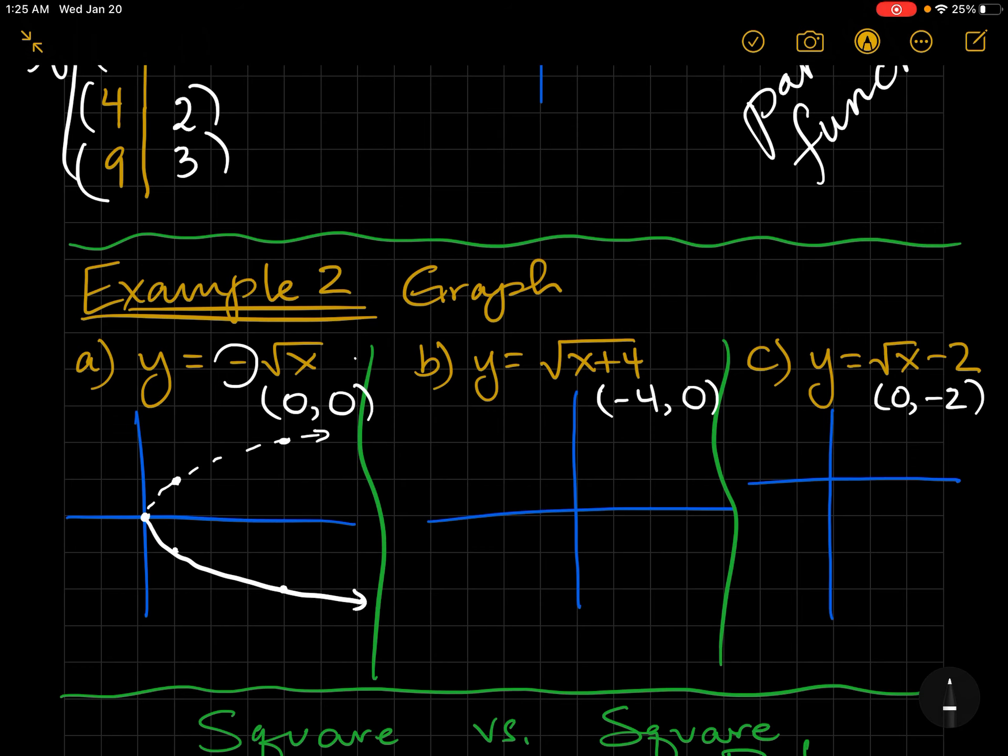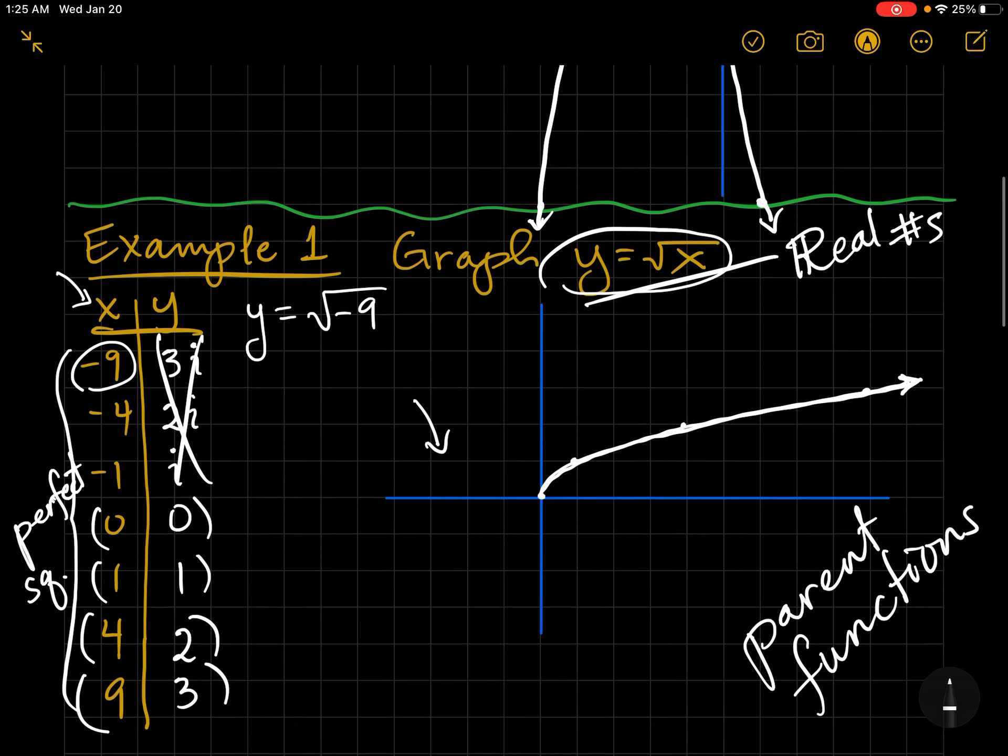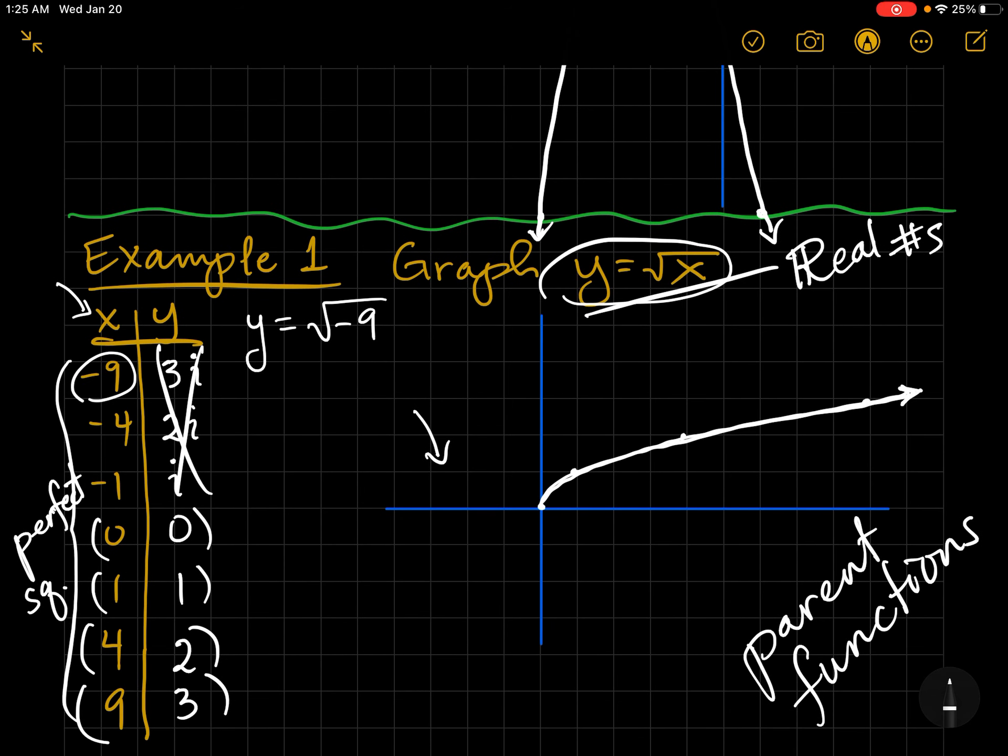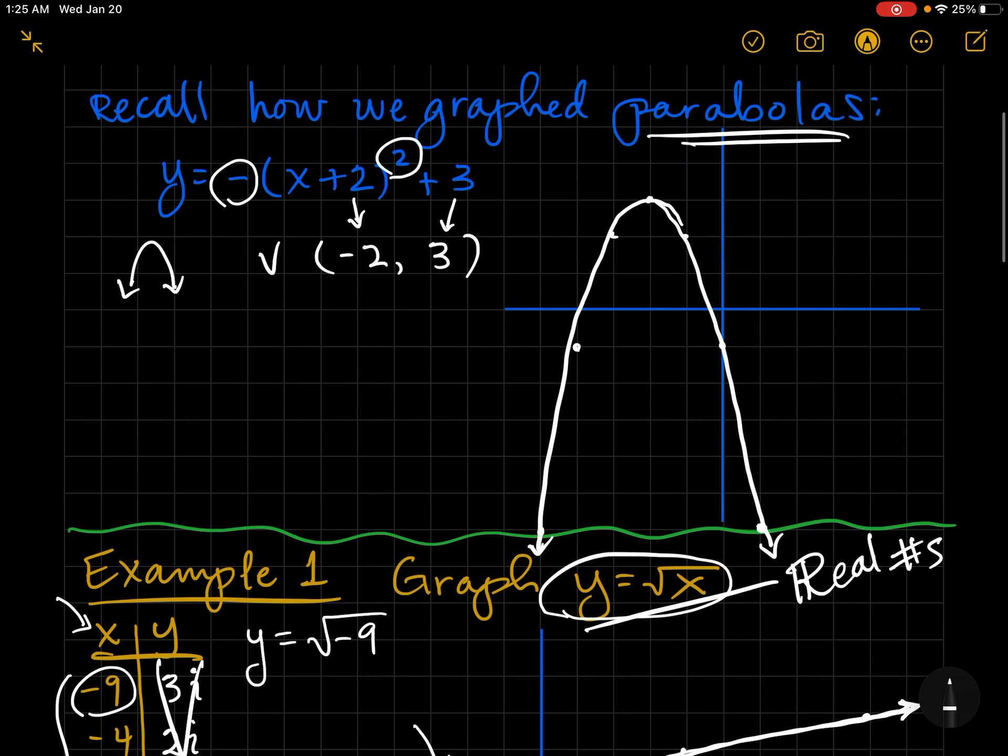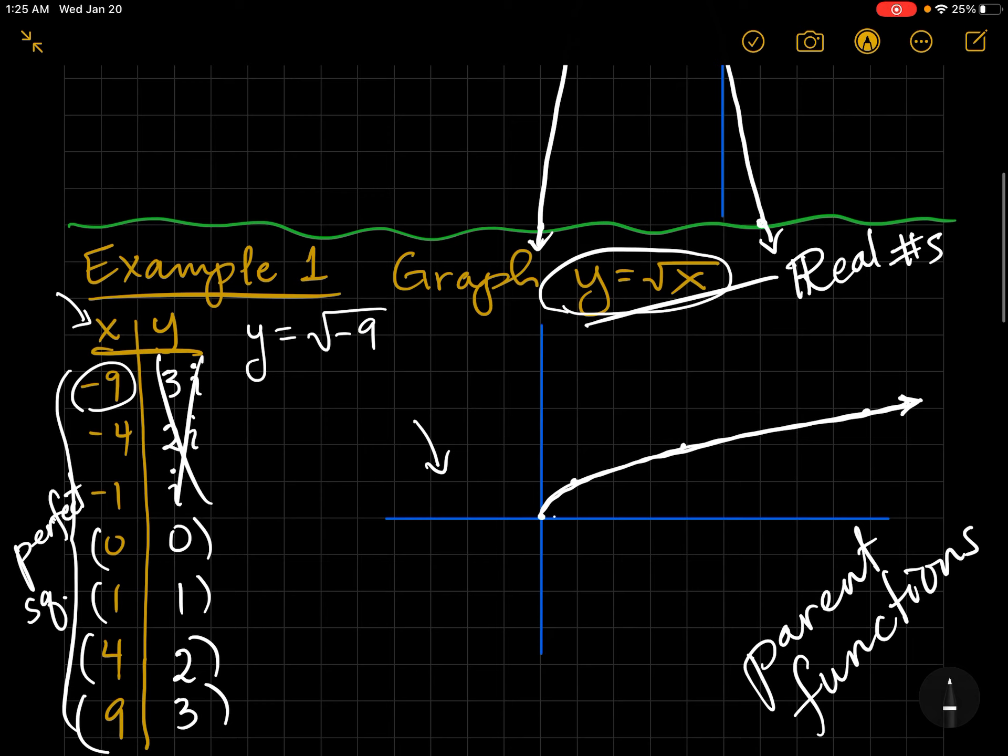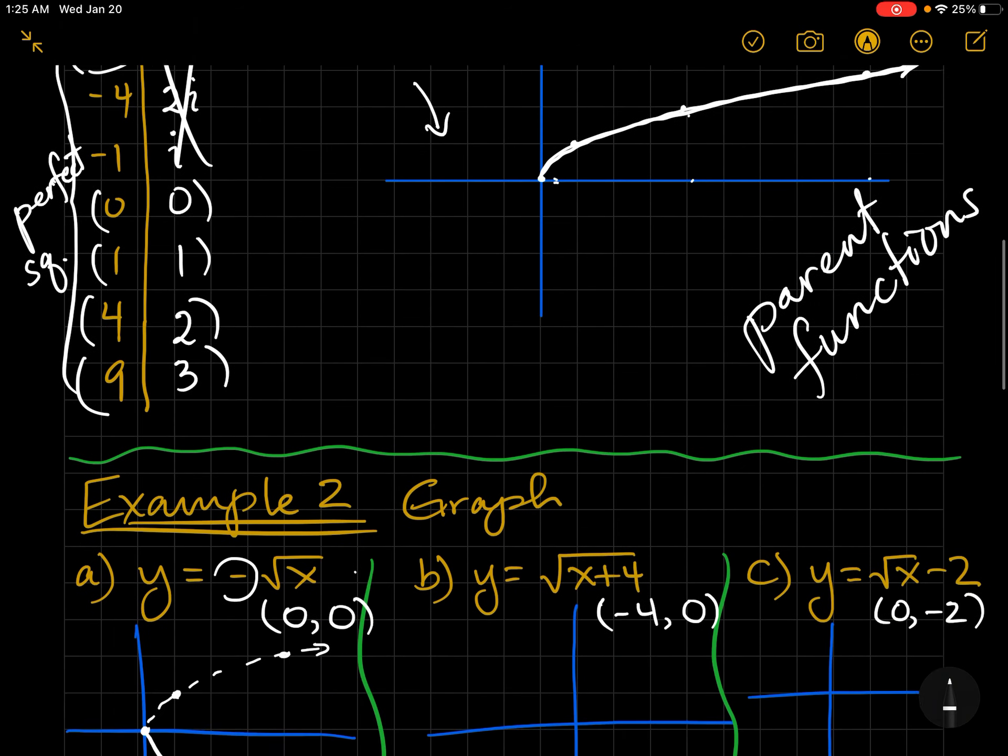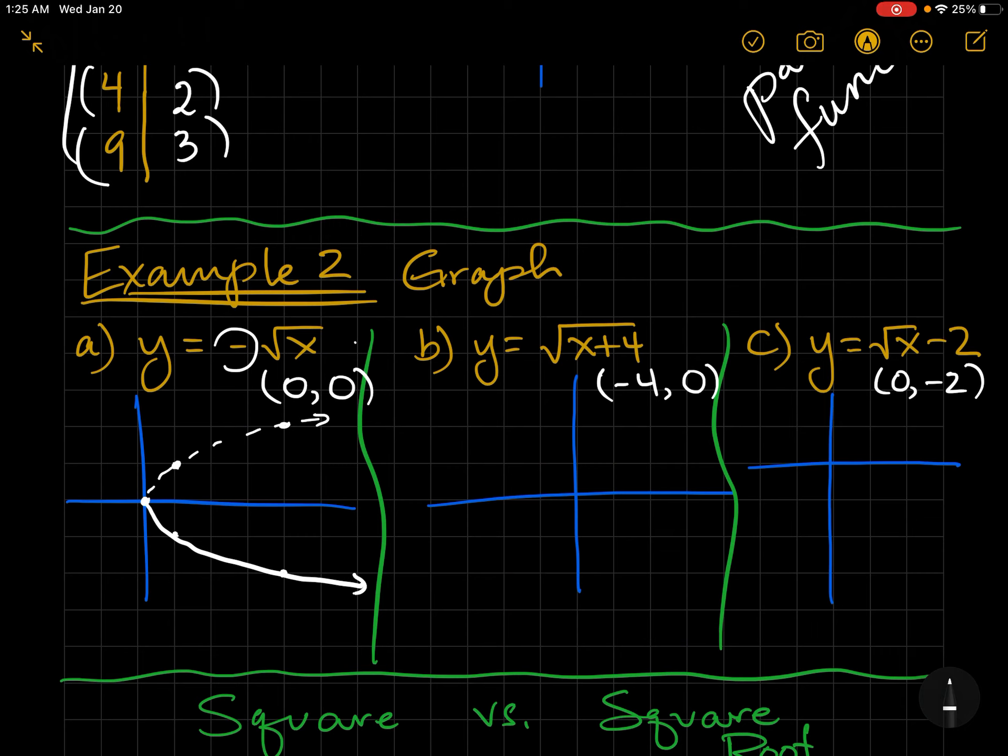Let's go back up to example one for a moment. I want you to realize that the square and the square root are very related. When we went here, we said one squared is one and two squared is four. Well, isn't the square root of four, two? The square root of nine is three. So the square and square roots, we're using the same points that we're already very familiar with. Okay, let's go here.